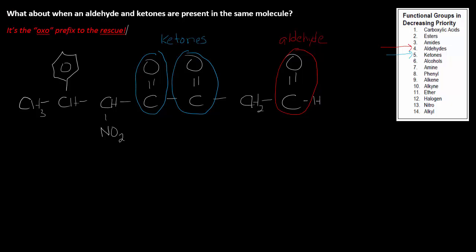The ketones come right behind the aldehyde at number five on the priority list, then we have the phenyl group at number eight, and nitro all the way down at 13. So the highest priority group is the aldehyde, which means that's carbon one.